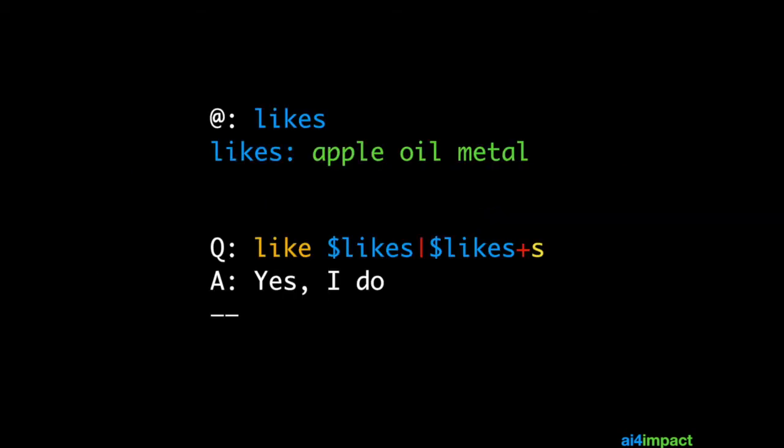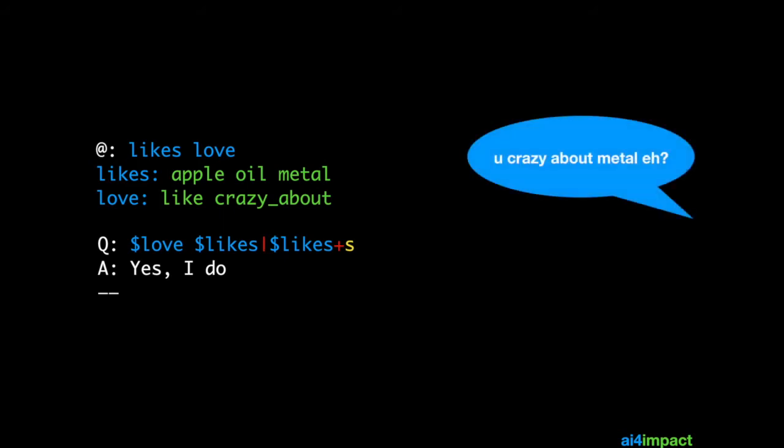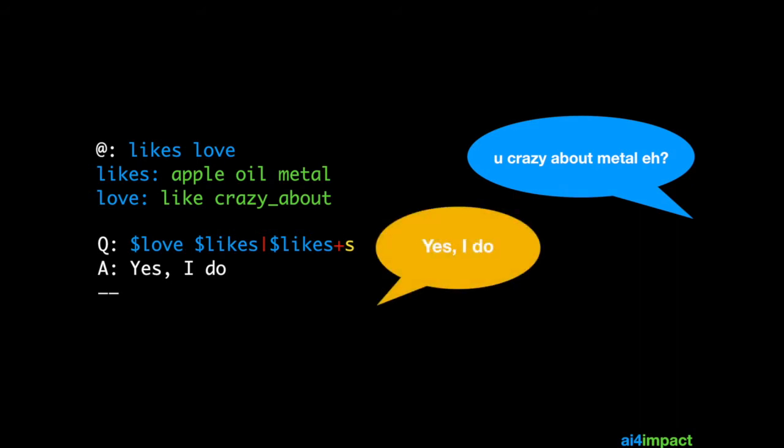What we need to do now is to change how we match the literal like. We want to make that a type as well. Let's call that type love. Love could either be like or crazy about. Notice, if you have a blank space between two words you must use an underscore for that to match correctly. We replace the like with dollar sign love because this is no longer a literal match, it's a match using types. Now if the user said you crazy about metal eh? The bot would say yes I do.